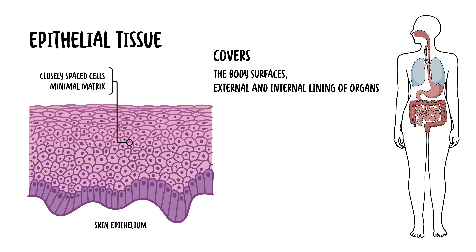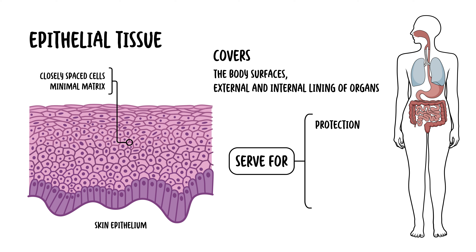And because of this, epithelial tissues serve many roles. They serve for protection, secretion, excretion, filtration, and absorption, particularly in glands and the kidneys, for example, where they are found abundantly.